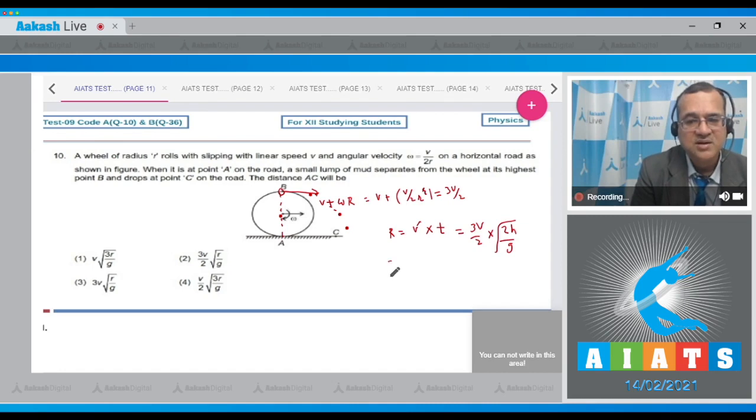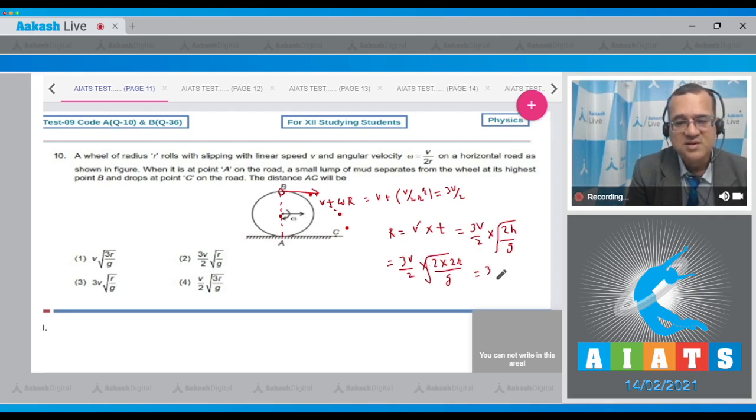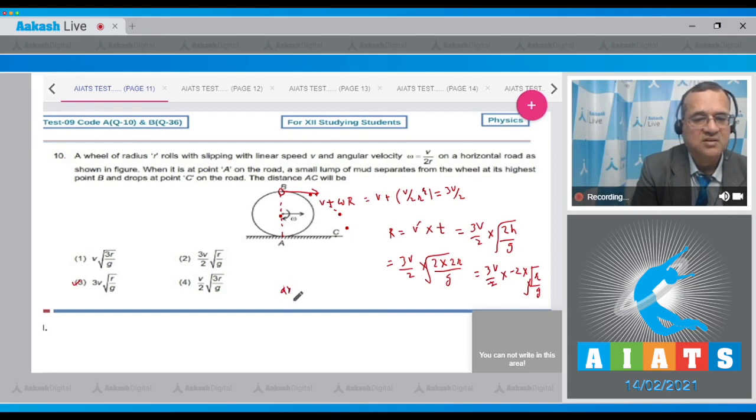So this is 3v/2 times √(4r/g). So 2 cancels with 2. This is 3v times √(r/g) and the correct option is answer 3.